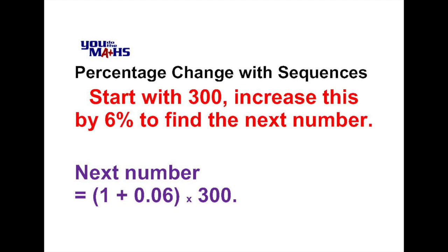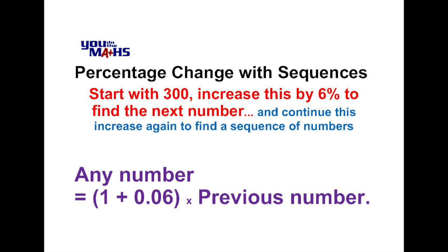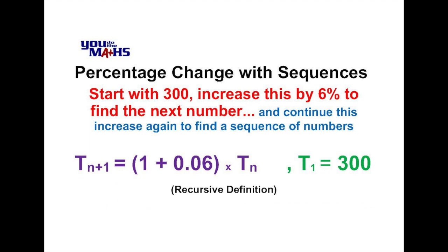If that's the case for increasing by 6% of the first amount, we could do that for any value. So any term in this sequence can be represented by 1 plus 0.06, all multiplied by the previous value in the sequence. Putting that in sequence notation, the next term — or t(n+1) — is equal to (1 plus 0.06) times t(n), with the start number being 300. In other words, we write it as a recursive definition.